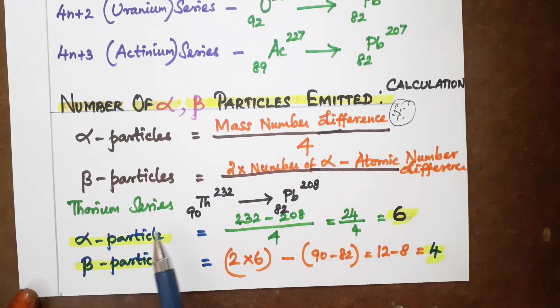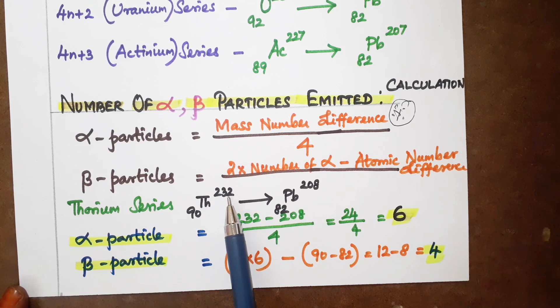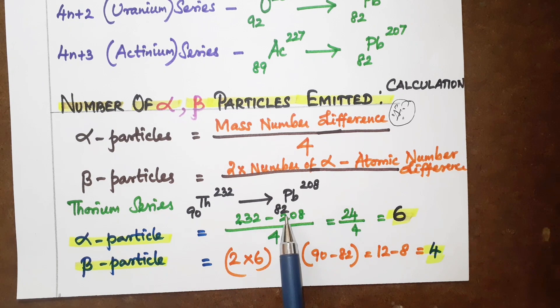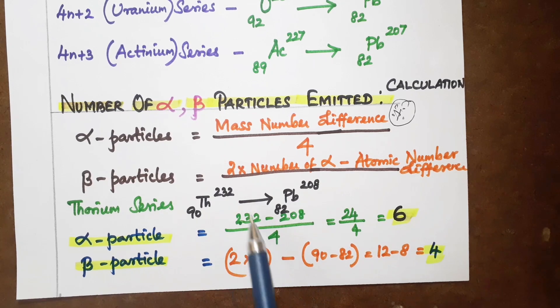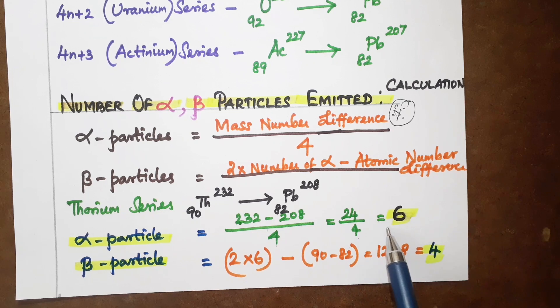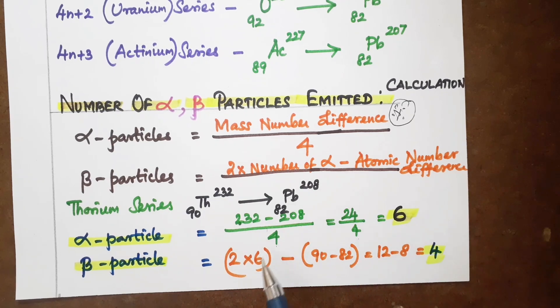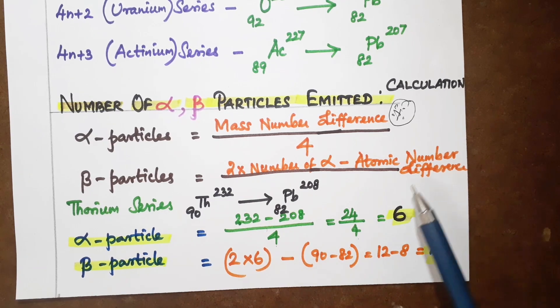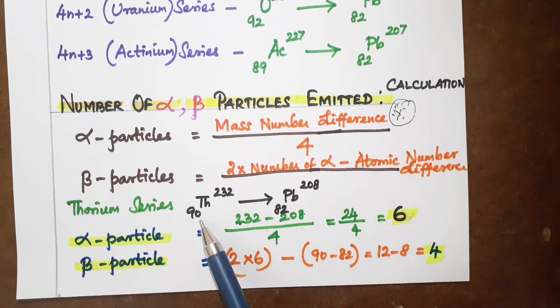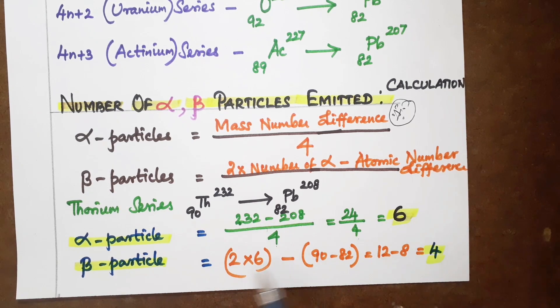Thorium series example: Th-232-90 to Pb-208-82. Alpha particles: mass number difference 232 minus 208 equals 24, divided by 4 equals 6 alpha particles. Beta particles: 2 times 6 minus atomic number difference (90 minus 82 equals 8), so 12 minus 8 equals 4 beta particles. Answer: 6 alpha particles and 4 beta particles.